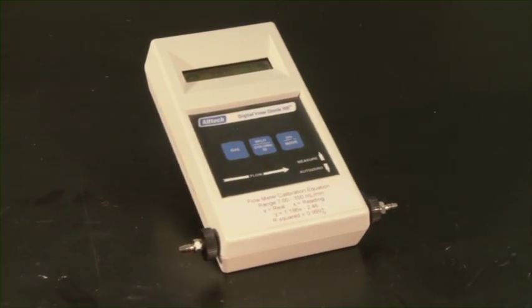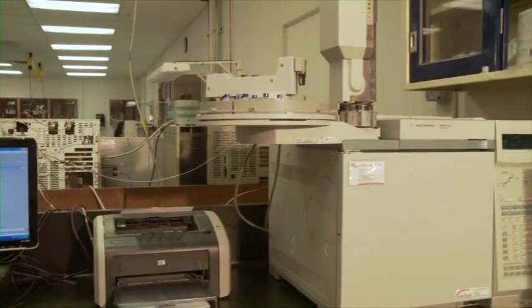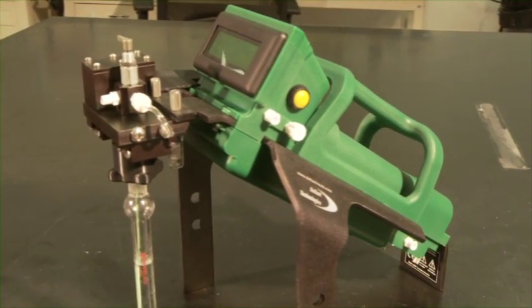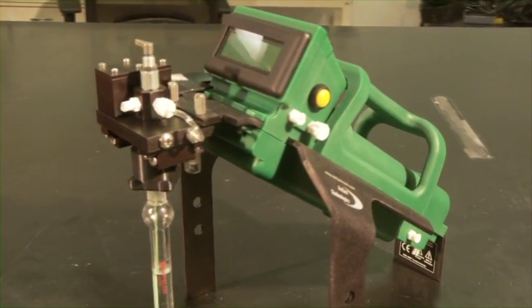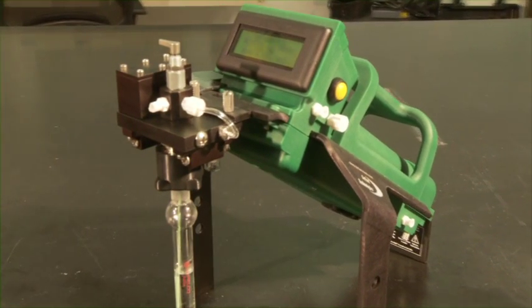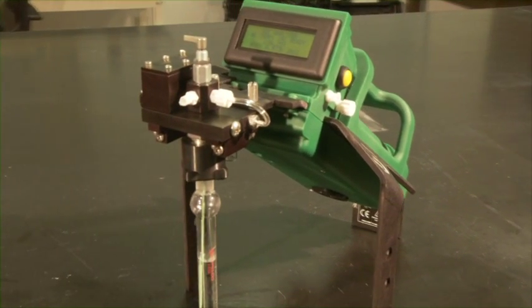All lab instruments need to be calibrated to ensure the accuracy of their results. In this video we will demystify calibration and describe the process in simple steps for the Frog 4000 chemical analysis instrument.